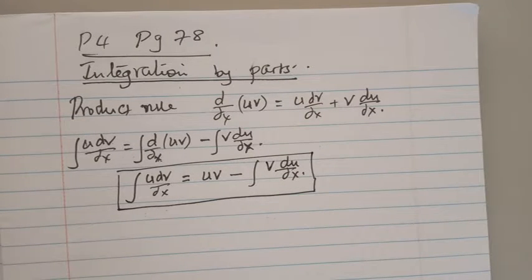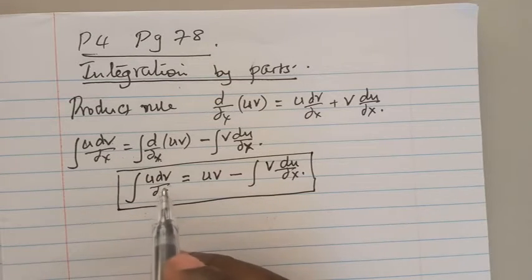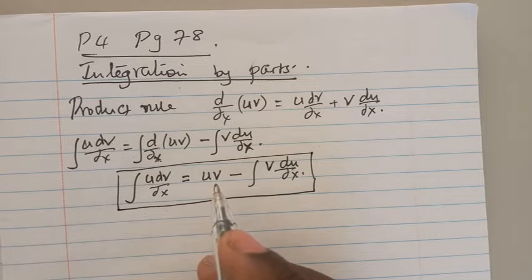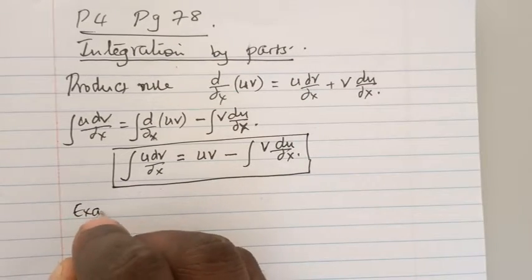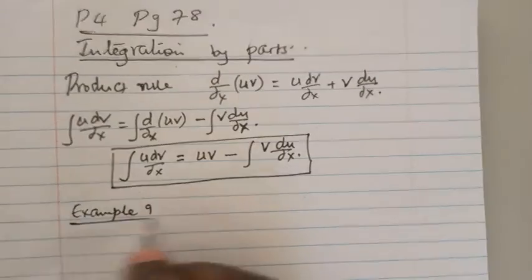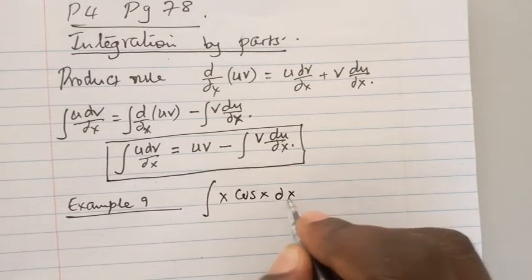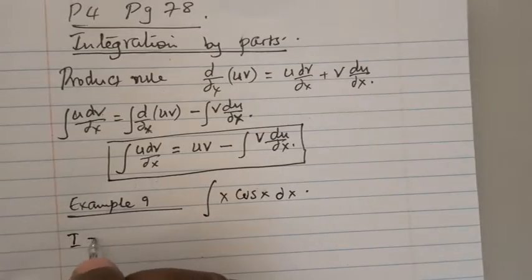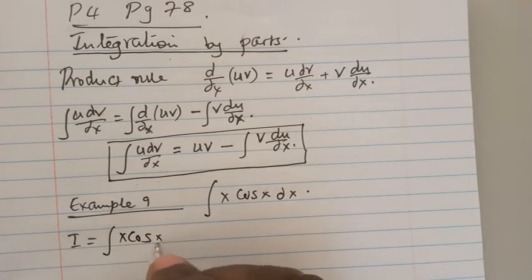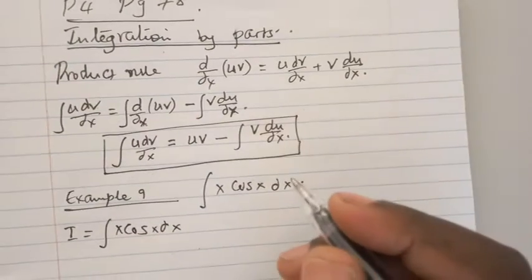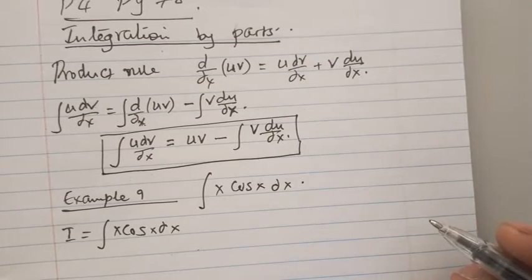To use integration by parts, you need to write the function you are integrating in the form of u dv/dx. You will have to choose what to set as u and what to set as dv/dx. Let's go directly to Example 9. Example 9 tells us: integral of x cos x dx. At this particular point, we have the luxury of choosing what will be our u and what will be our dv/dx.